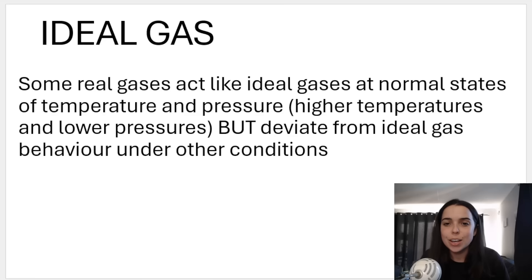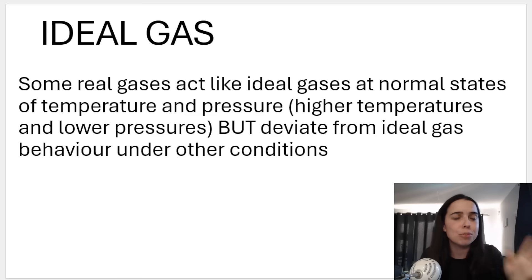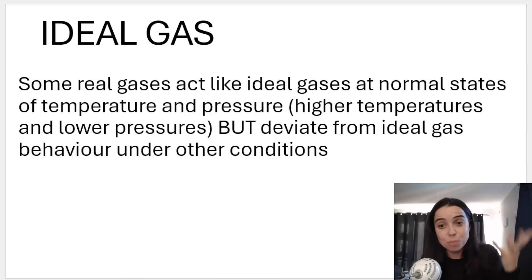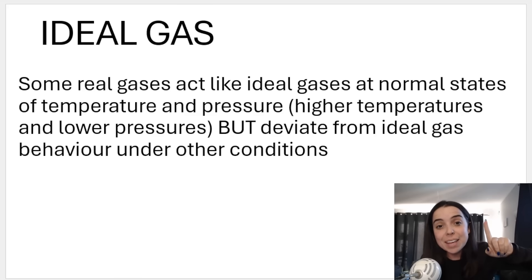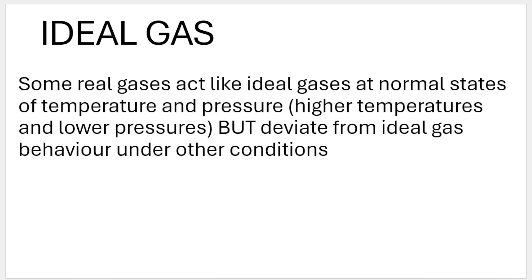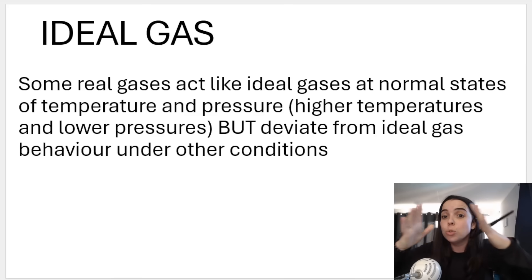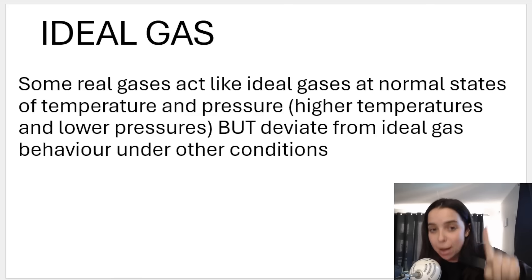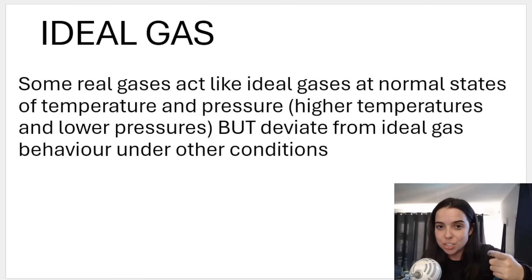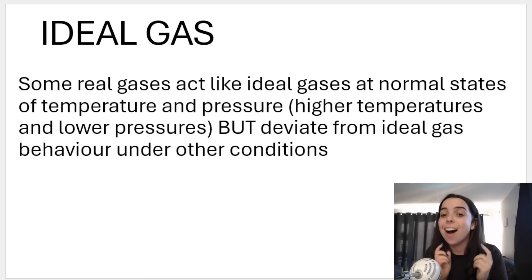So why do we even speak about ideal gases if real gases deviate from the ideal gas model? The ideal gas model helps us explain the behavior of gases and gas molecules under certain temperatures and pressures. Some gases do act like ideal gases at normal states of temperature and pressure — when the temperature is not too low and when the pressure is not too high. Under normal conditions, real gases act like ideal gases.